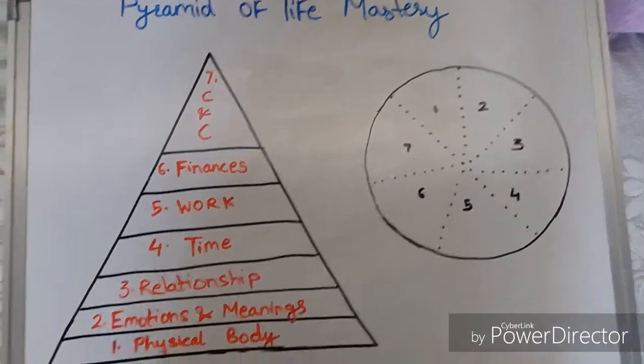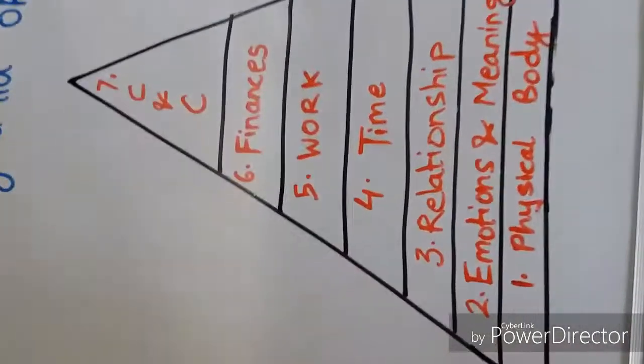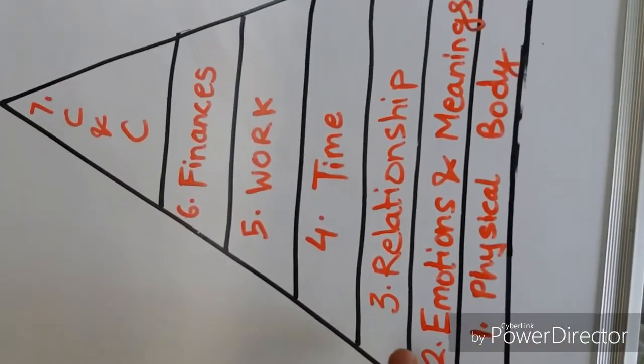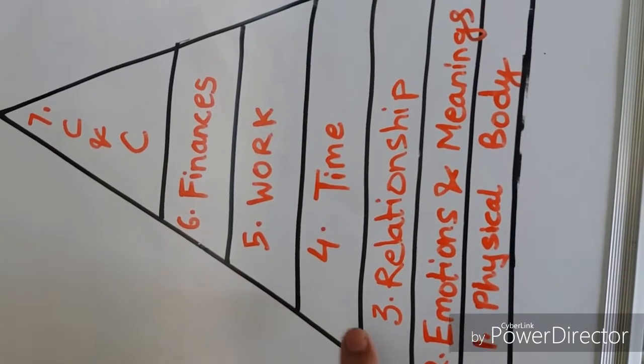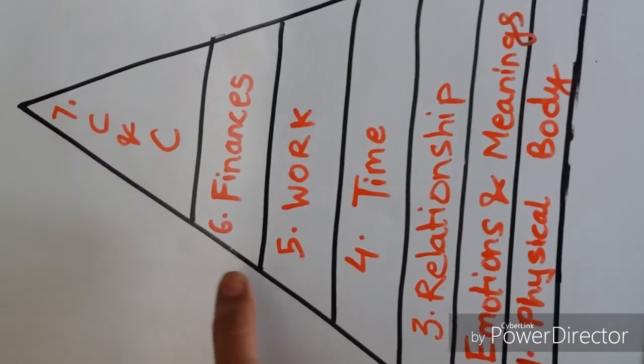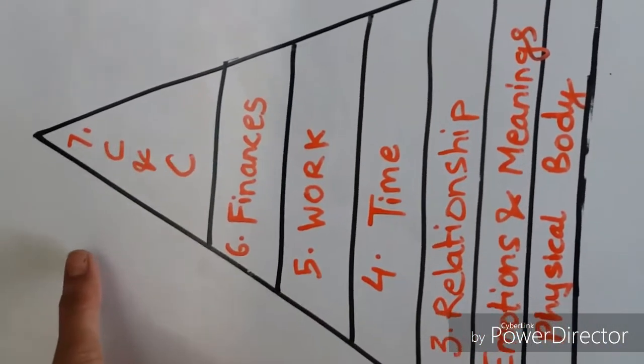This is the Pyramid of Life Mastery. It has seven different layers. First is physical body, second emotions and meaning, third relationship, fourth time, fifth work, six finances and seventh is contribution and celebration.